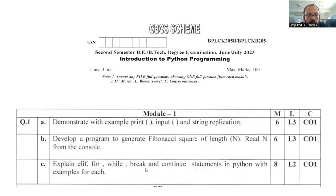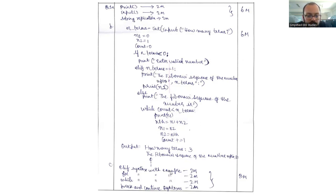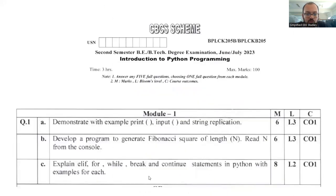Question three: explain the elif, for, while, break, and continue statements in Python with suitable examples. Weightage is eight marks — a very simple question. For each of for loop, while loop, and elif, if you write the syntax with a suitable example you will be getting two marks each. Break and continue are loop control statements. Try to use some examples also so that the evaluator can assess your answer properly.